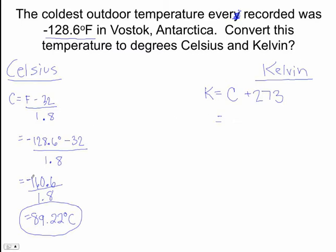This is actually going to be negative. So we've got -89.22, and we're going to add 273 to that. We should get a number that's less than 273. And you should get 183.78, and that's going to be your Kelvin.